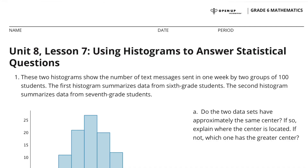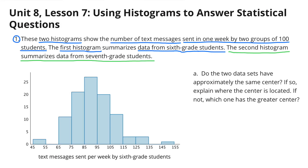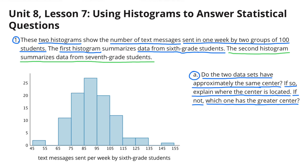Unit 8, Lesson 7: Using Histograms to Answer Statistical Questions, Number 1. These two histograms show the number of text messages sent in one week by two groups of 100 students. The first histogram summarizes data from 6th grade students. The second histogram summarizes data from 7th grade students.